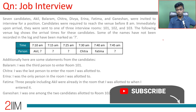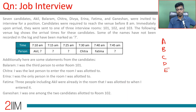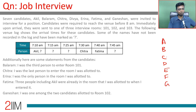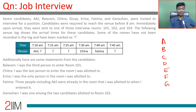They've been kind enough to give us A through G. Sometimes when names all start with the same letter it's a pain, but here it is A, B, C, D, E, F, G. Candidates were required to reach the venue before 8 AM. Immediately upon arrival they were sent to one of three interview rooms: 101, 102, and 103. The venue log shows arrival times for these candidates.